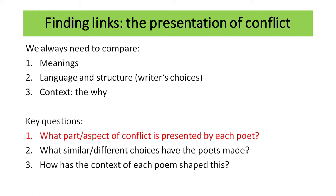Today we're going to ask ourselves three questions within this category of the presentation of conflict. We're going to ask: what part or aspect of conflict is presented by each poet — that's comparing meanings. We're going to ask what similar and different choices the poets have made — that's comparing writer's choices. And finally, how has the context of each poem shaped these choices and this meaning? That, of course, is number three: context, the why.